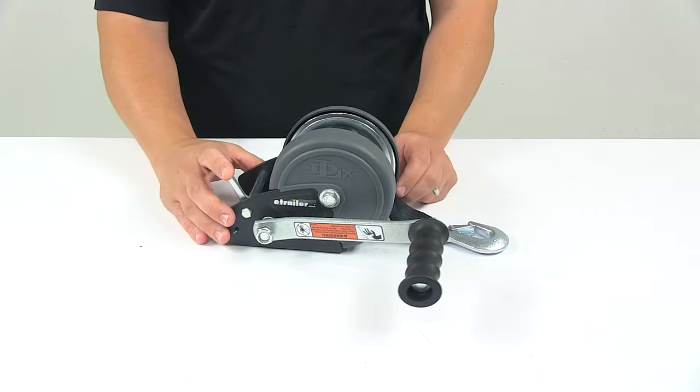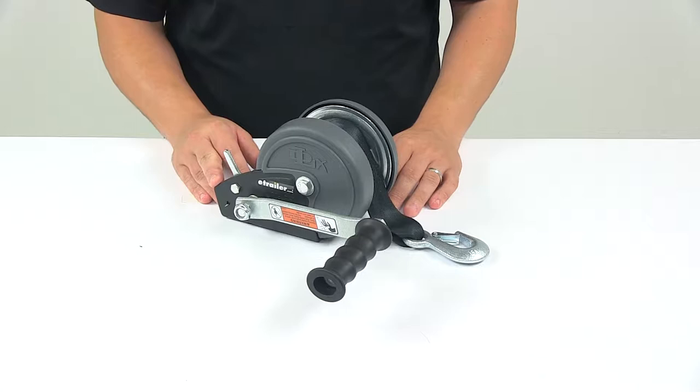Today we're taking a look at the Dutton-Lanson hand winch. This standard duty hand winch is designed for horizontal pulling applications. This is perfect for loading boats onto your trailer and maneuvering bulky equipment.